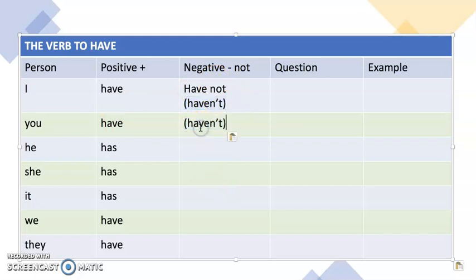Now with he has, again we're still going to add not, so we've got has not. Again, we can make this shorter, and all we do is we write hasn't. We've taken out the O, just like we took out the O here.